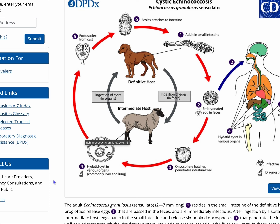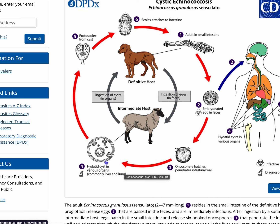Echinococcus granulosis can develop in both the definitive and intermediate hosts. The definitive hosts are canines, and this is where the adult form of Echinococcus granulosis develops, and they release the eggs into the dog's or the canine's feces. The intermediate hosts, which are cattle, including sheep, pigs, and sometimes humans, will ingest these eggs.